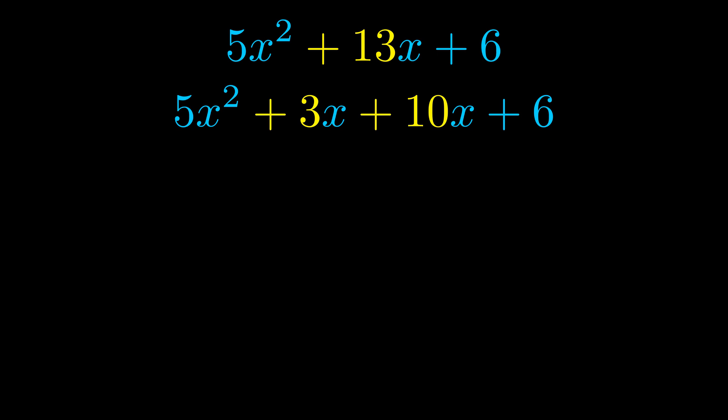Once we've done this, we go ahead and put parentheses around the first term and the last term. And we do that so that we can take the greatest common factor out of both terms.